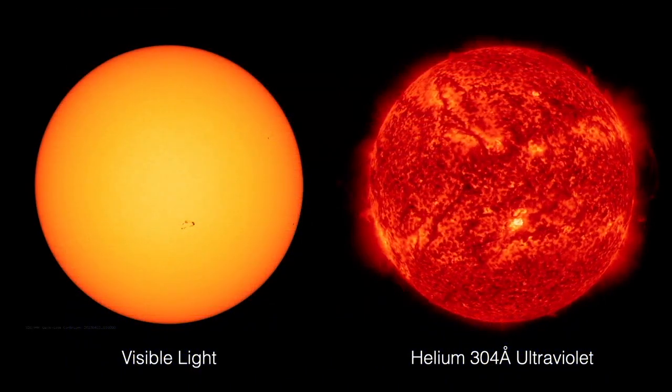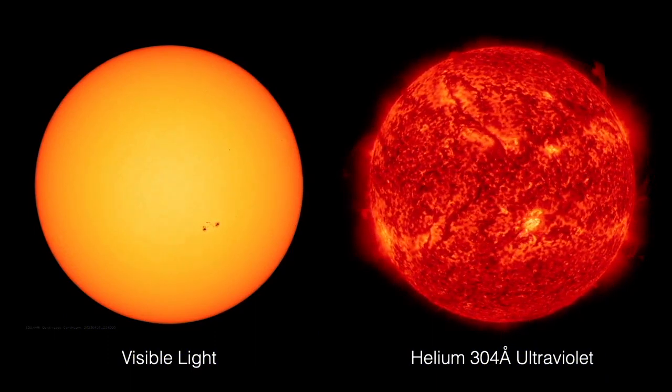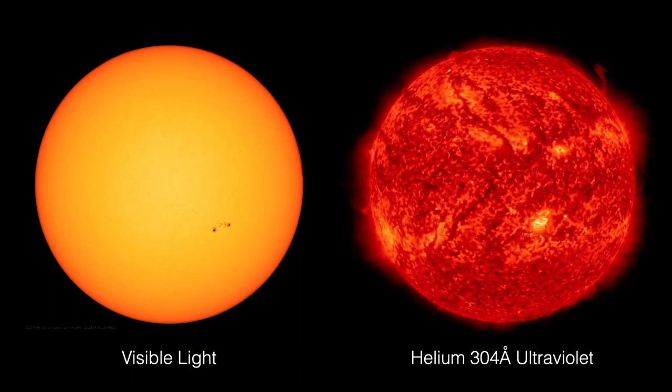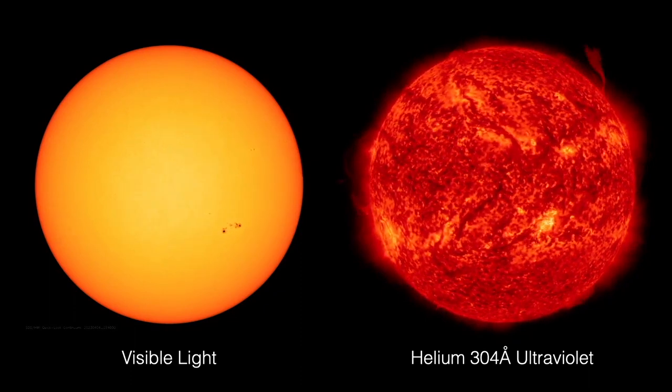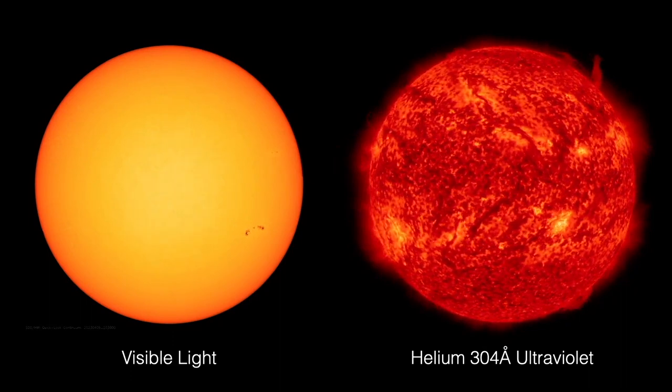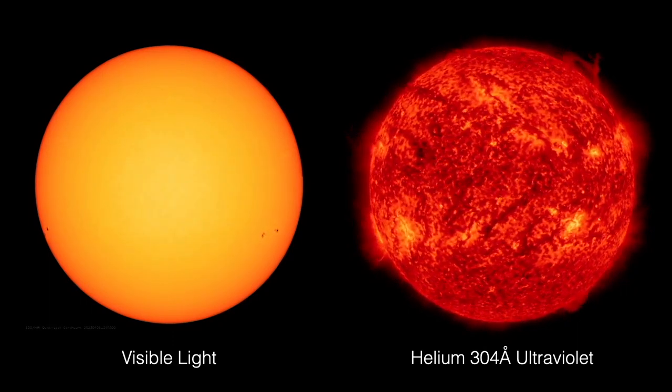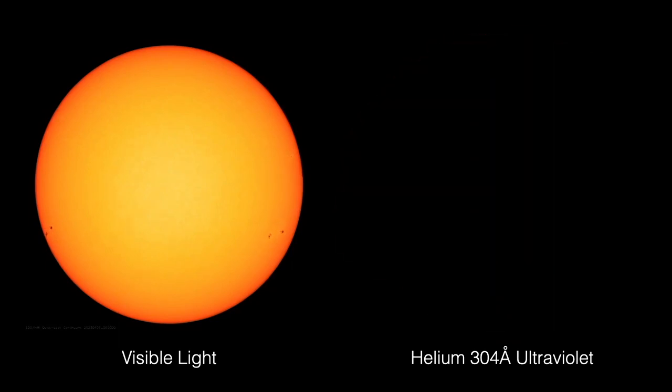If you look at the sun in the colors of light given off by specific atoms, you can learn lots about it. Here, we see the sun in visible light and in extreme ultraviolet light given off by helium. You can't see this ultraviolet light with your eyes. So here it's been colored red.